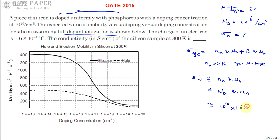Now, ND is 10^16 and q is 1.6×10^-19. The mobility of electrons at room temperature is read from the diagram: at a doping concentration of 10^16, the line for electrons gives μn = 1200 cm²/V·s.